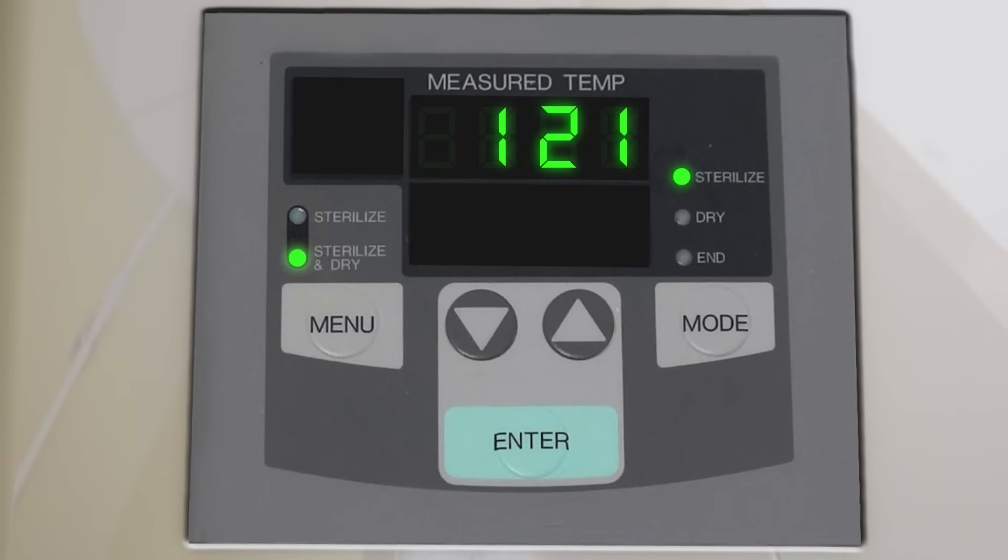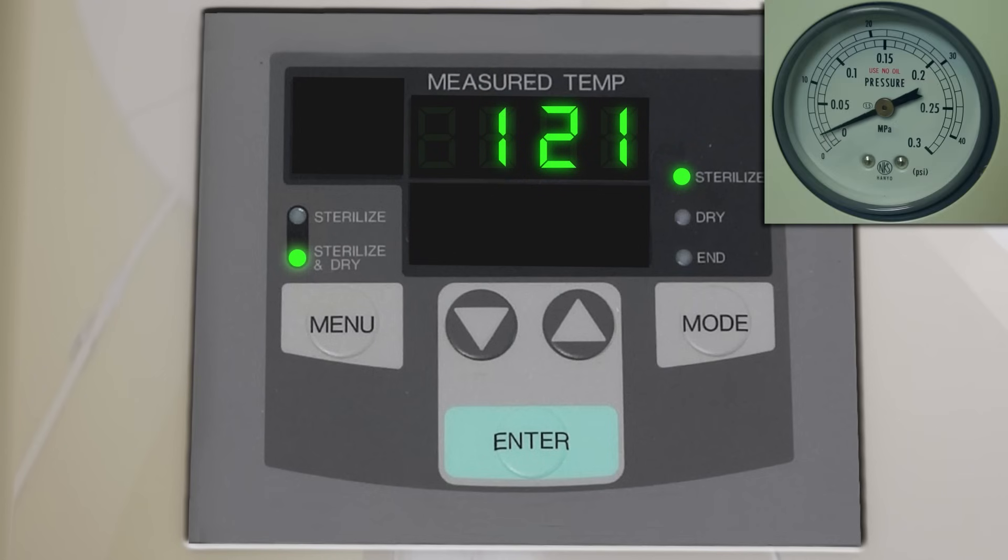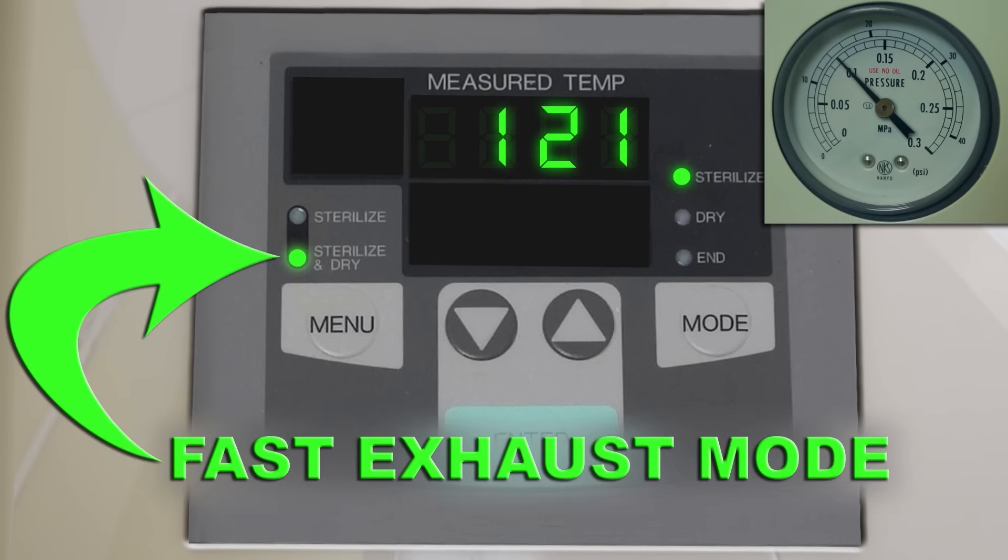Set the autoclave to 121 degrees Celsius, 15 psi, and a 20-minute runtime. Select the fast exhaust mode. Complete and initial the log.